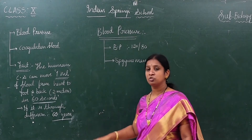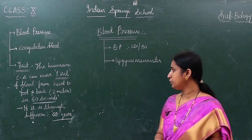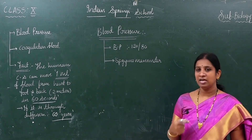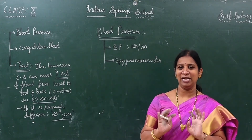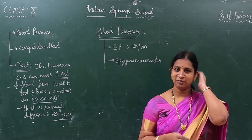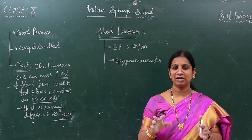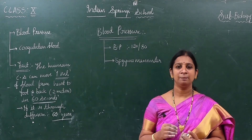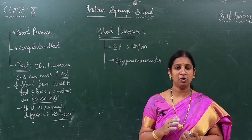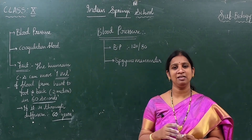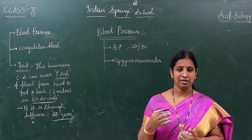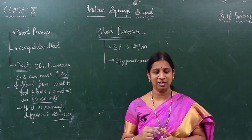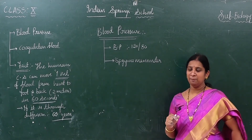Now we move on to the first concept: blood pressure. Every time someone asks 'do you have BP?', students say 'no, I don't have BP.' But we should not say that — without blood pressure we cannot survive. Everybody must have normal BP. You should say 'I don't have high BP or low BP; I have normal BP.'